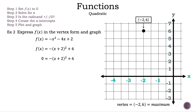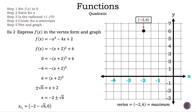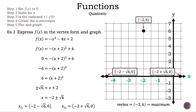Now let's find the x-intercepts. The zeros are found by setting the output to 0 and solving for x. Let's subtract 6 on both sides, divide both sides by negative 1, take the square root on both sides, and subtract 2 on both sides. So now we have x is equal to negative 2 plus or minus the square root of 6. The first x-intercept is the point negative 2 minus the square root of 6, 0. The second x-intercept is the point negative 2 plus the square root of 6, 0. Let's plot them and connect the dots. That is example 2.